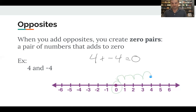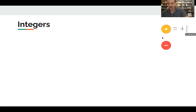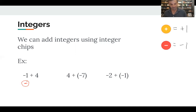The second way to add integers uses yellow and red chips called integer chips. A yellow chip with a plus means positive one, and a red chip with a minus means negative one. On your written work, if you just have a pencil, you can draw circles — write a minus for negative chips and a plus for positive chips. Let's use the same problems we did on the number line.